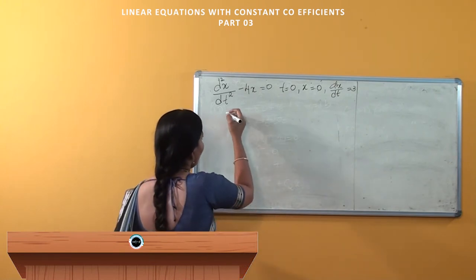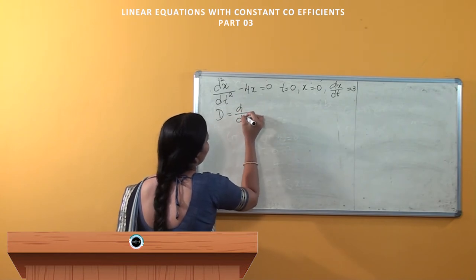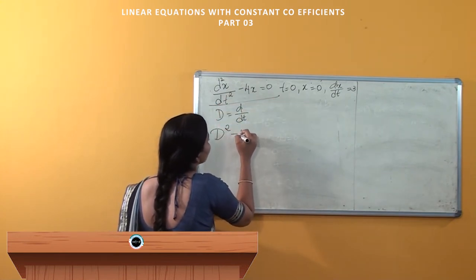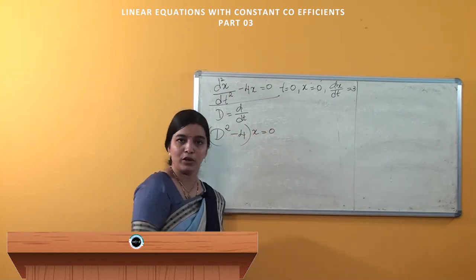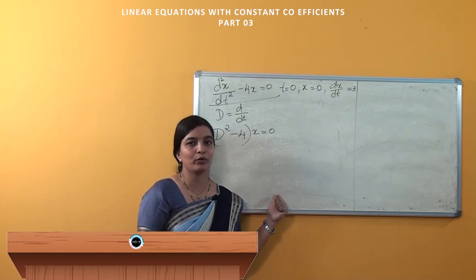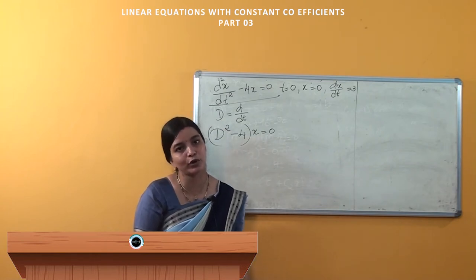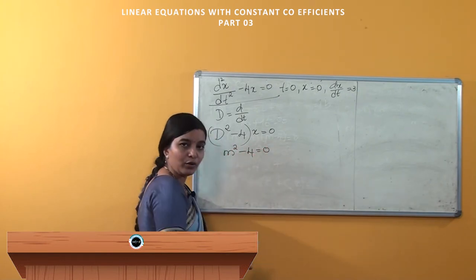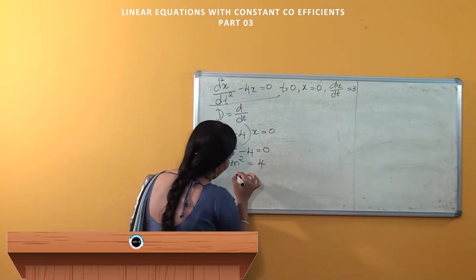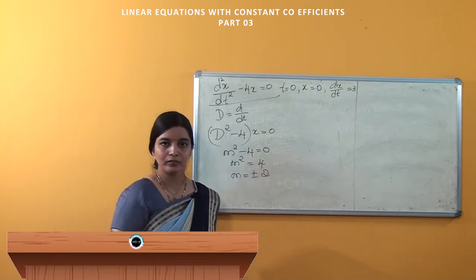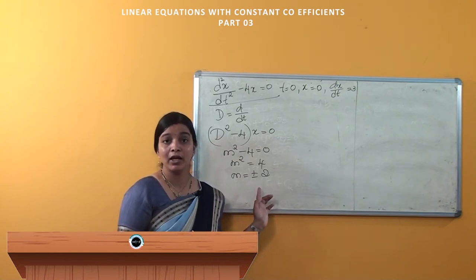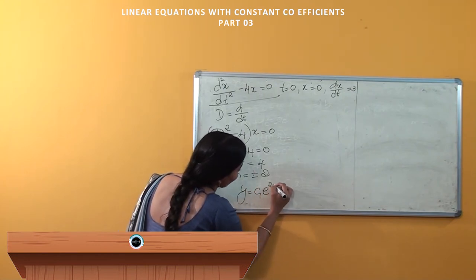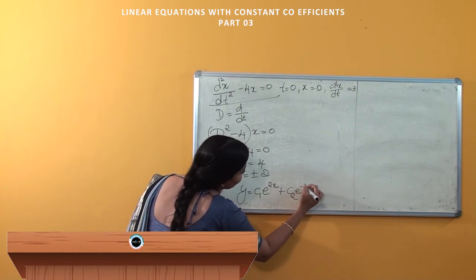Representing D as d/dt, the equation becomes (D² - 4)x = 0. To solve this, we write the auxiliary equation: m² - 4 = 0, so m² = 4, and m = ±2. There are two roots: one is +2 and the other is -2.